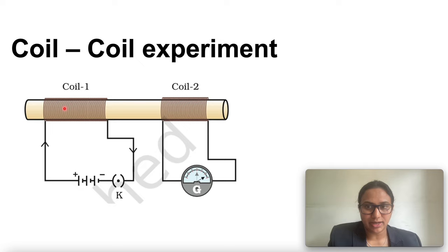Connect coil 1 having large number of turns in series with a battery and a plug key. Also connect coil 2 with a galvanometer. Plug the key. Observe the galvanometer. Is there a deflection in the needle? You can see that there is a momentary deflection in coil 2.